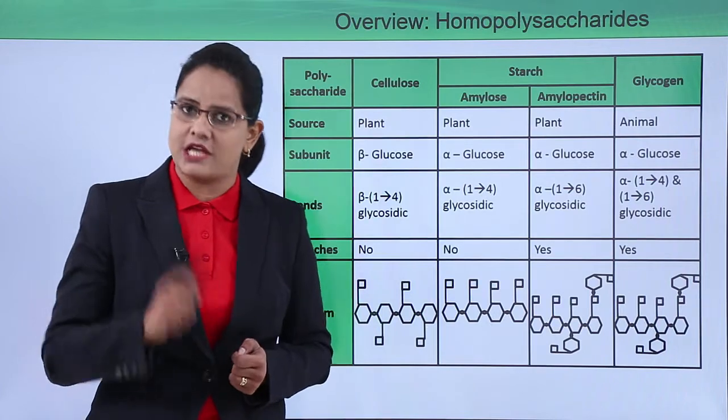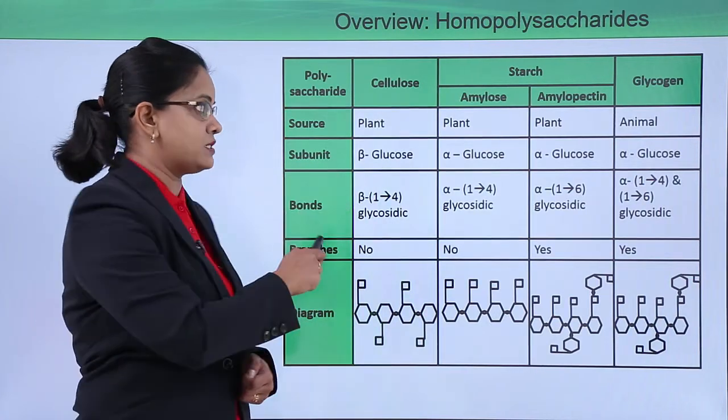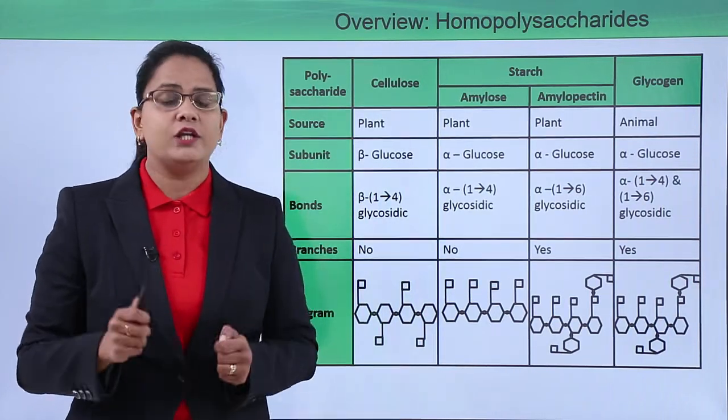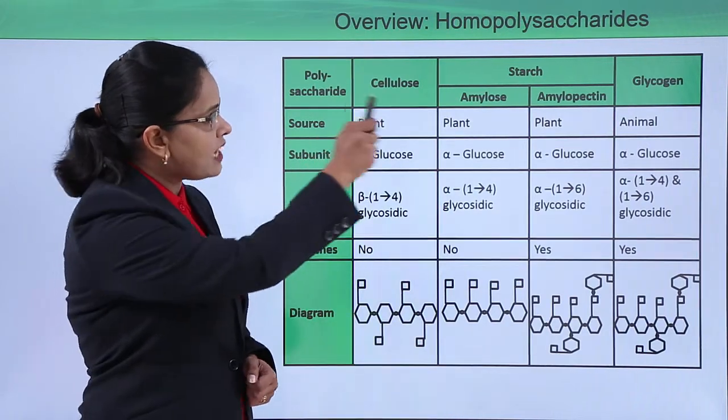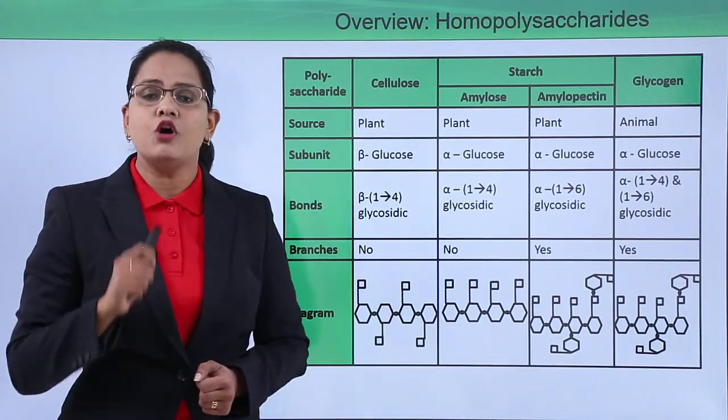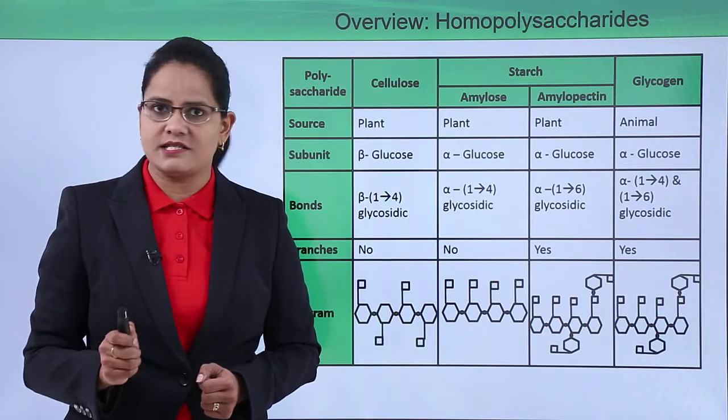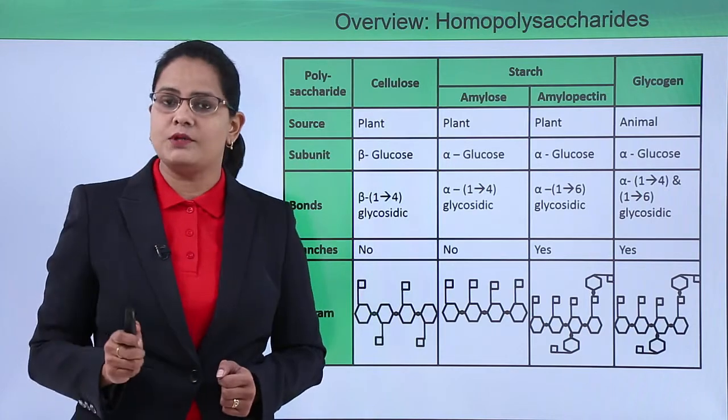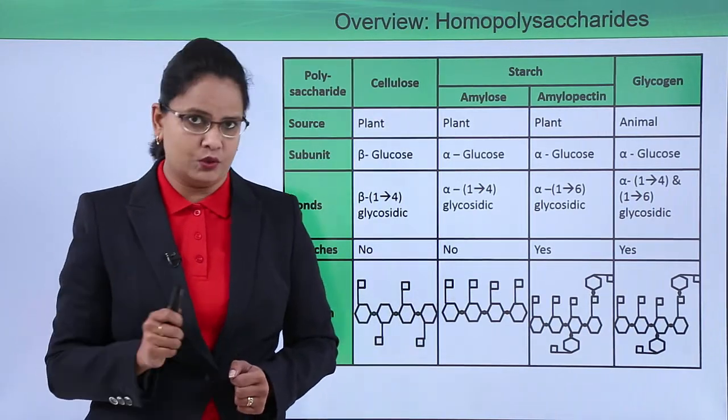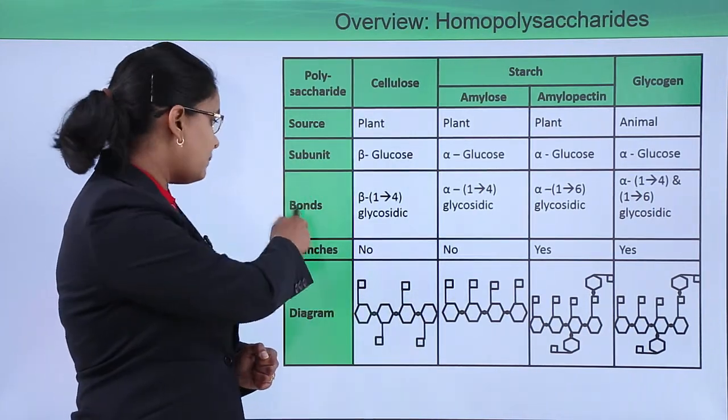Subunits: all the polysaccharides are made up of monosaccharide subunits. The subunit for cellulose is beta-glucose. In case of starch, it is made up of two polymeric units, amylose and amylopectin, so both of them have the same subunits: alpha-glucose. In case of glycogen, also the subunits are alpha-glucose.